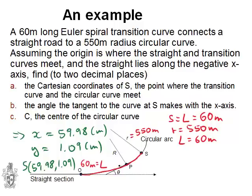Now, that is theta. Well, as it turns out, remember, we had a formula for theta that I gave you earlier. Theta is S squared divided by 2RL. That's the angle. Now, we've got S, R and L given. So, if I just put those in, I get 60 squared divided by 2 times 550 and that is times 60, all in the denominator.